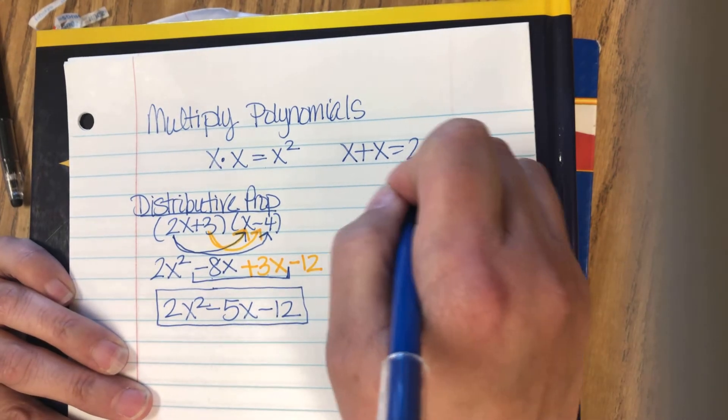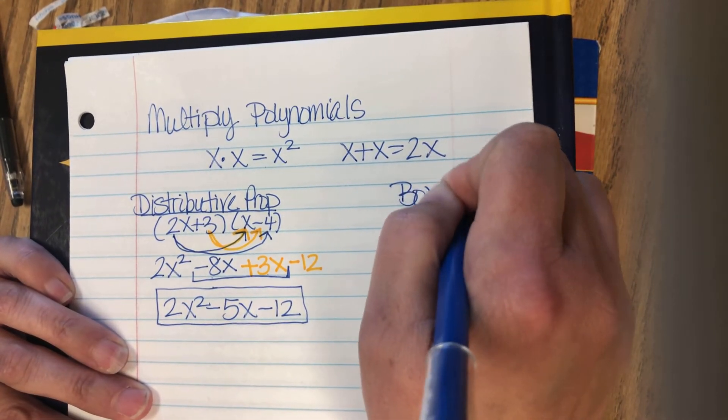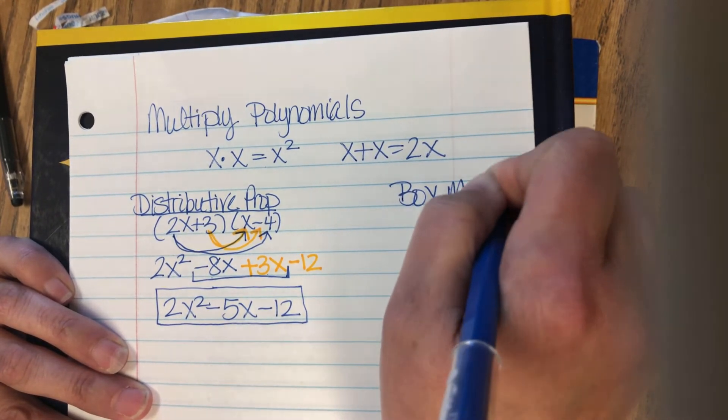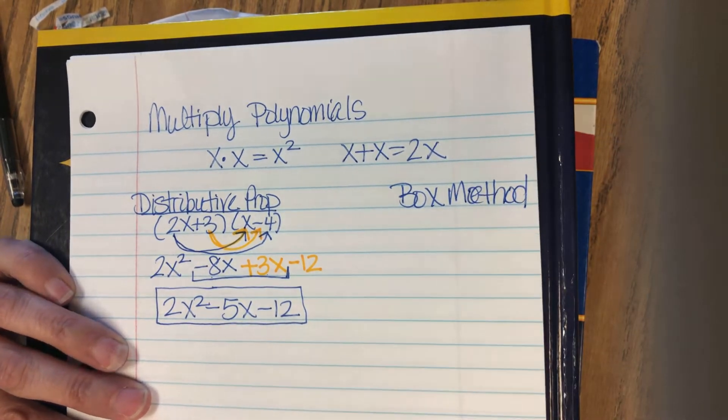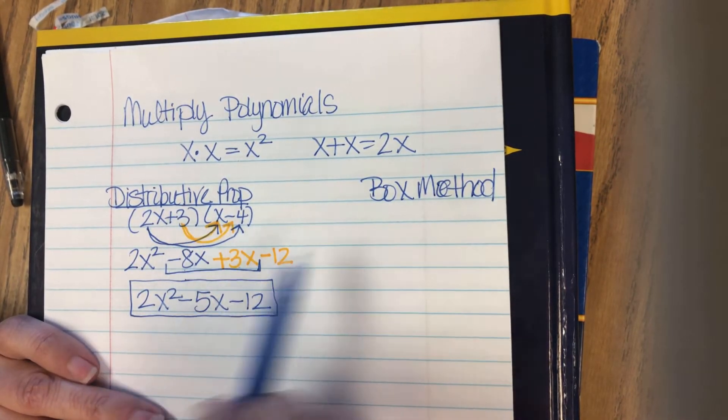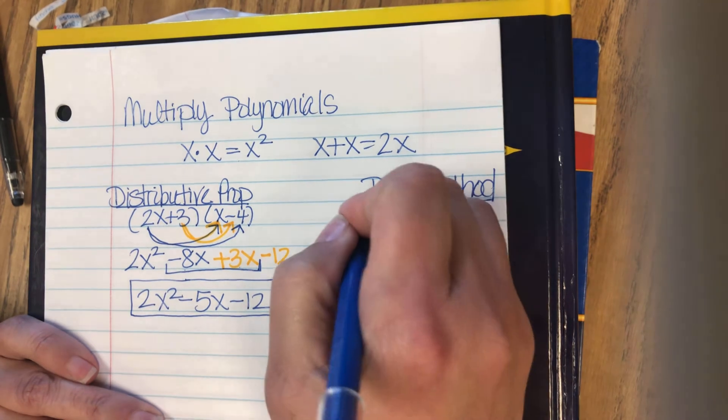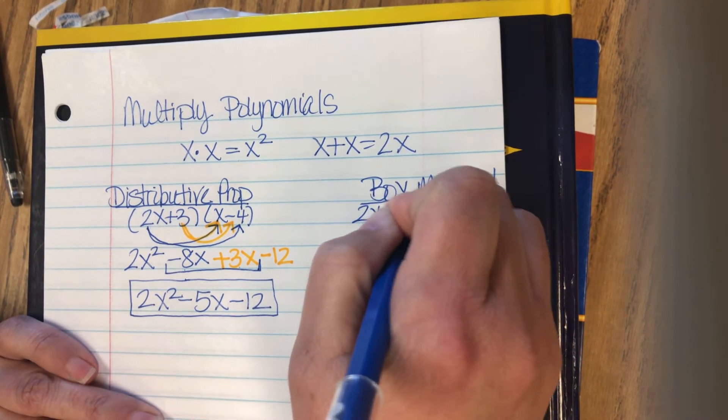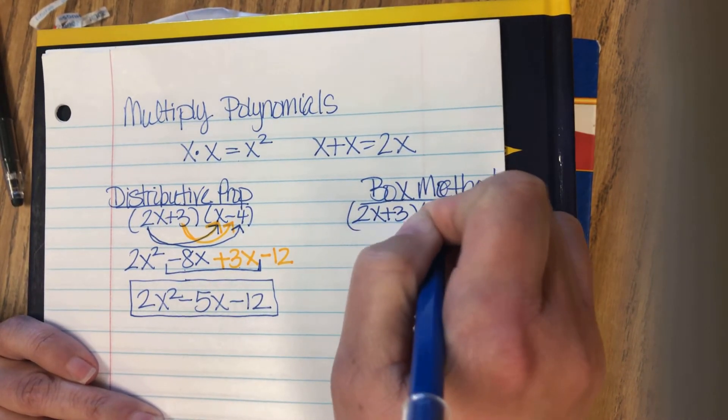The other way to do this is the box method. For the box method, we're going to use that same problem, 2x plus 3 times x minus 4.